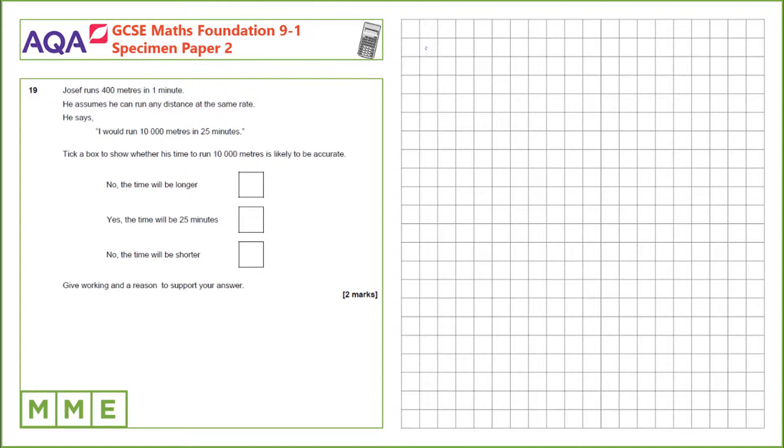Let's first check his calculation. So 10,000m divided by 400m is 25. So assuming that he'll take 25 minutes if he runs at the same pace makes sense.